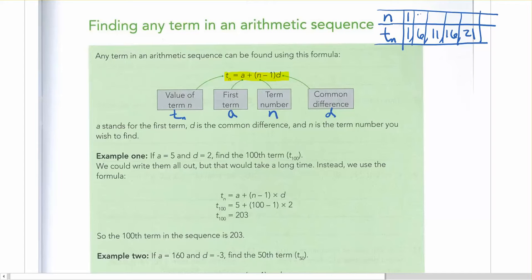So the first term is 1, and the second term is 6, and the third term is 11, and the fourth term is 16, and the fifth term is 21. So n is which number, which number it is in the sequence. So it's the term number, which one is it? How far along are you on?